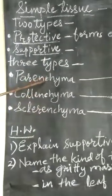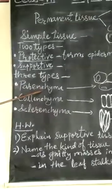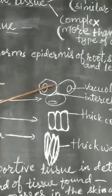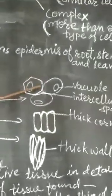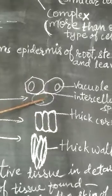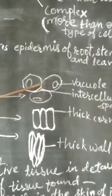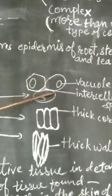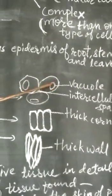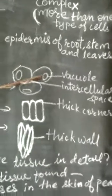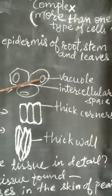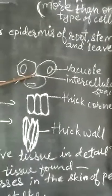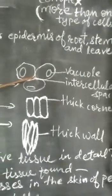First, I will explain parenchyma. Parenchyma cells can be polygonal, oval or circular in shape. Their cell wall is thin and they contain a large vacuole. In between the two cells, it has intercellular space.